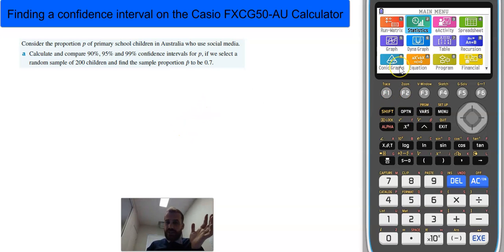Finding a confidence interval on your Casio calculator is pretty easy. You just need to keep your wits about you. Let's jump straight into it.